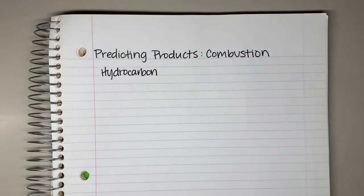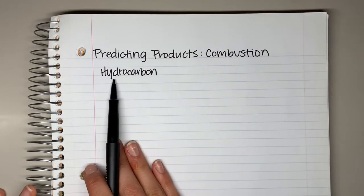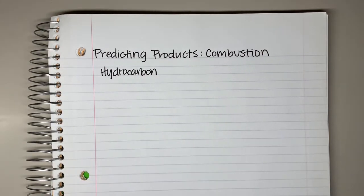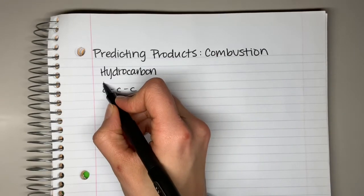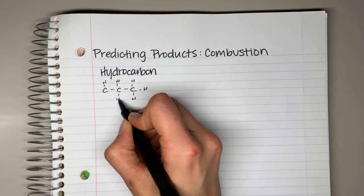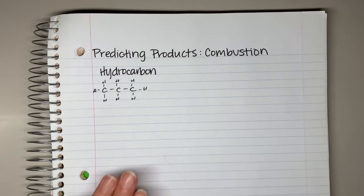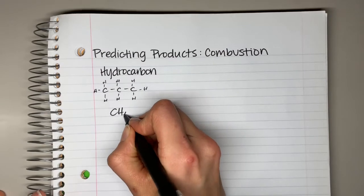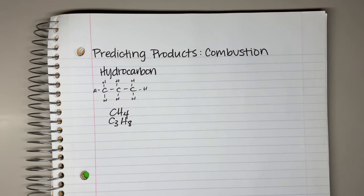A hydrocarbon is really exactly what it sounds like. Hydro refers to hydrogen, and carbon is carbon. So a hydrocarbon is just a long chain of carbons bonded to hydrogens — literally just carbons and hydrogens as a molecule. This could be CH4, C3H8 — these are all hydrocarbons.